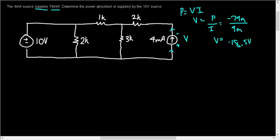Next, they ask for the power absorbed or supplied by the 10 volt source. Because P equals VI, we need both V and I to find the power. V is going to be 10 volts because it's a 10 volt source. So our new mission becomes to find the current through the 10 volt source. With that, we can find the power.